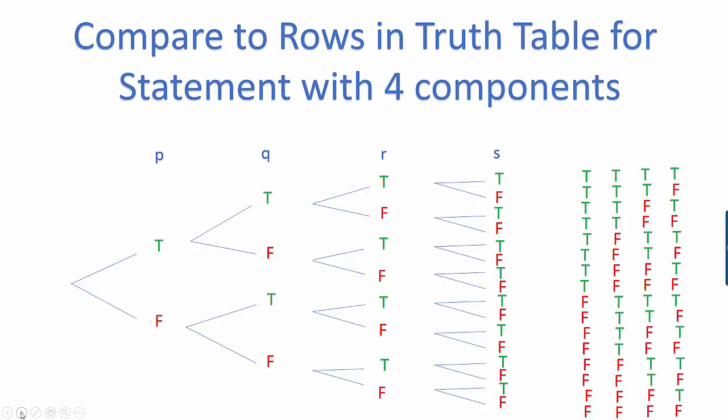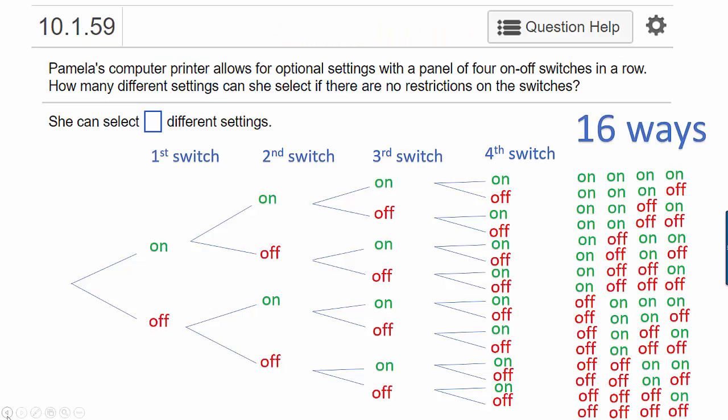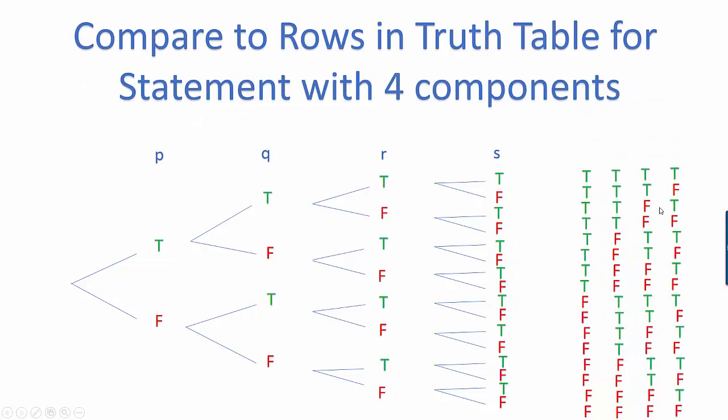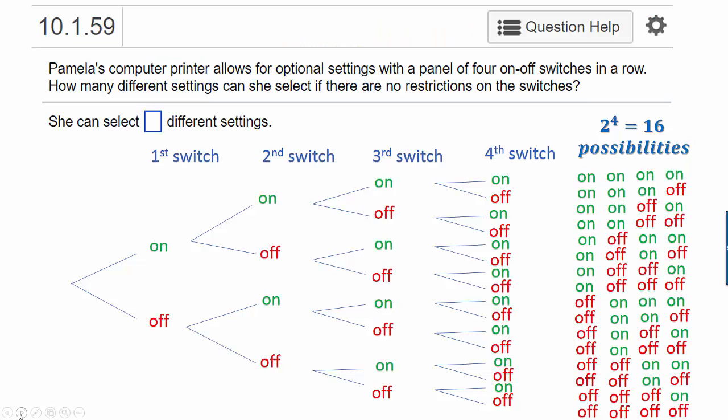This pattern might look familiar to you if you've already completed a chapter of Math for Liberal Arts on logic. It compares directly to the rows in a truth table for a statement with four components. You see how the tree diagram looks exactly the same? These four columns on the right would be your truth table. And if you recall, when you have four components, you had two to the fourth or 16 possible rows, possible truth scenarios. So sometimes it's helpful when you're trying to process new information to refer back to something you already understood.